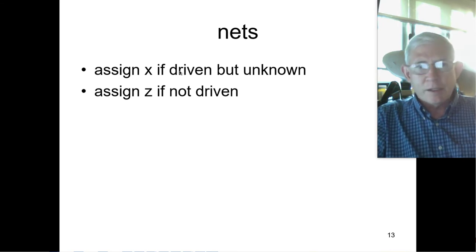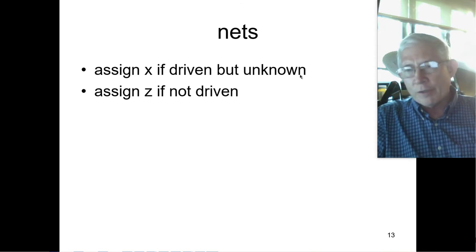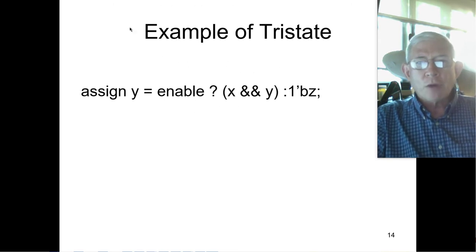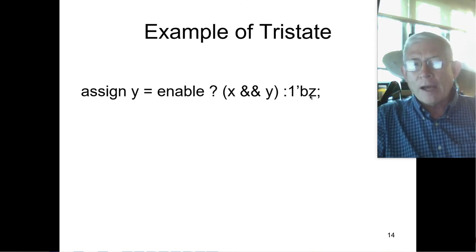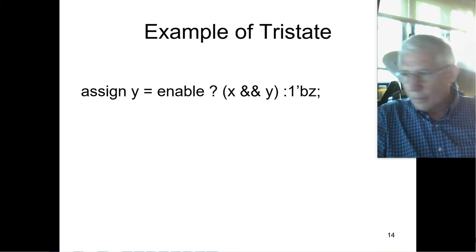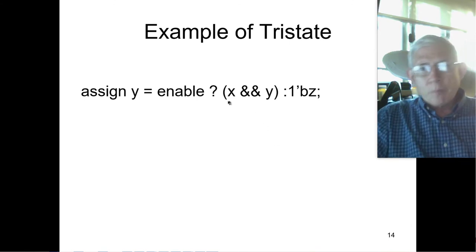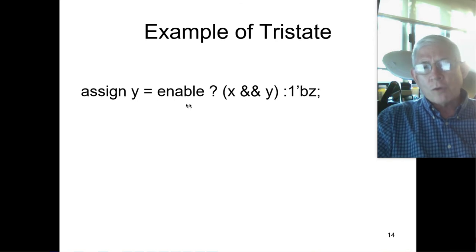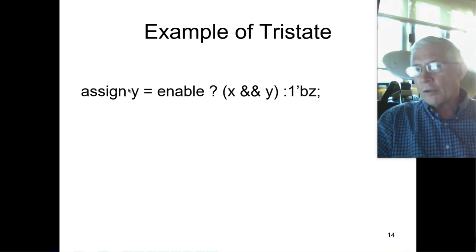If a net is driven but you don't know what the value is, then you would assign it X. But if it's not driven, then it's going to be high Z. Here's how we do tri-states — we get these from a constant. Our constant 1'bZ assigns the value of Z to Y. If the enable evaluates true or one, then this is assigned to Y. If enable evaluates false, then 1'bZ is assigned to Y, meaning Y is assigned the high Z state, or disconnected.